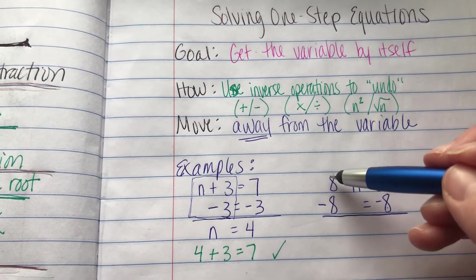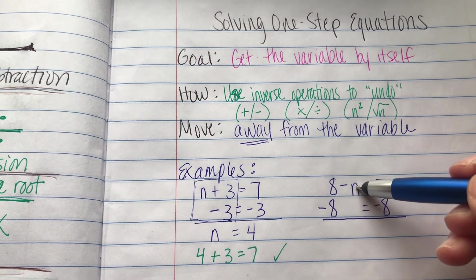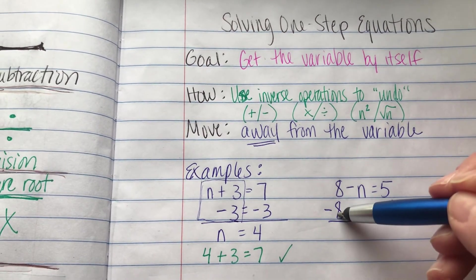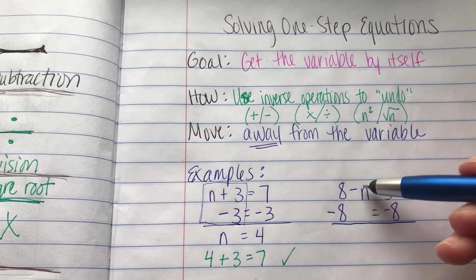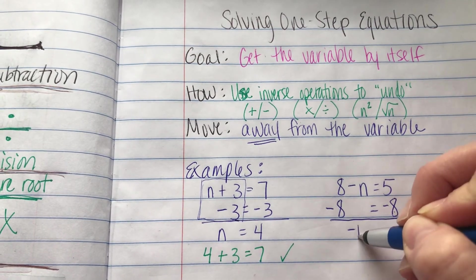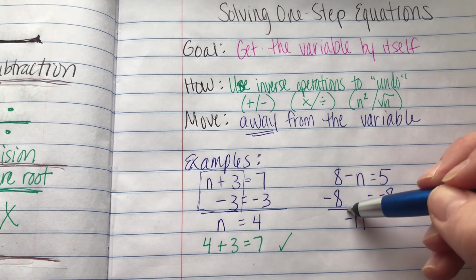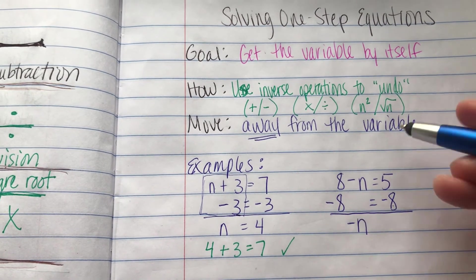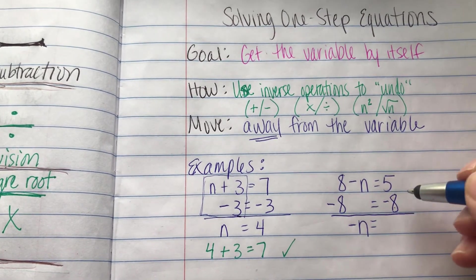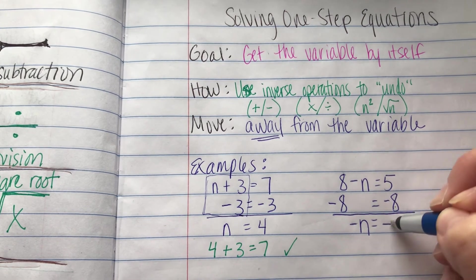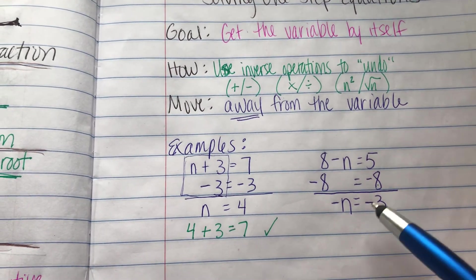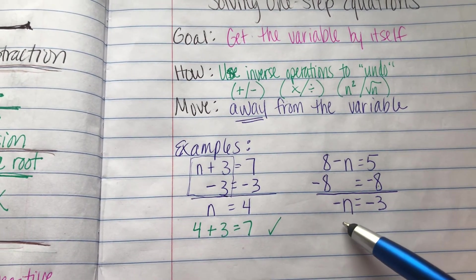So here we have 8 minus n minus 8. Well, 8 minus 8 is nothing. So we just have the regular, plain old negative n here. Don't lose that negative sign. Make sure you remember to bring that with you when you come down here to the next line. 5 minus 8 is negative 3. Remember that we can think of negatives as opposites also.